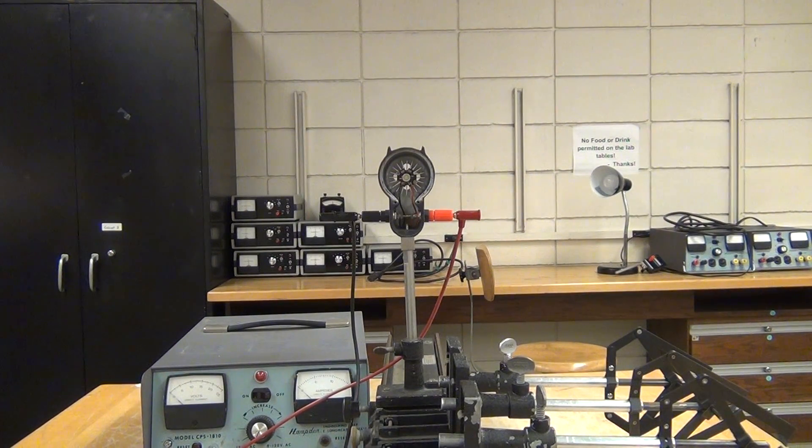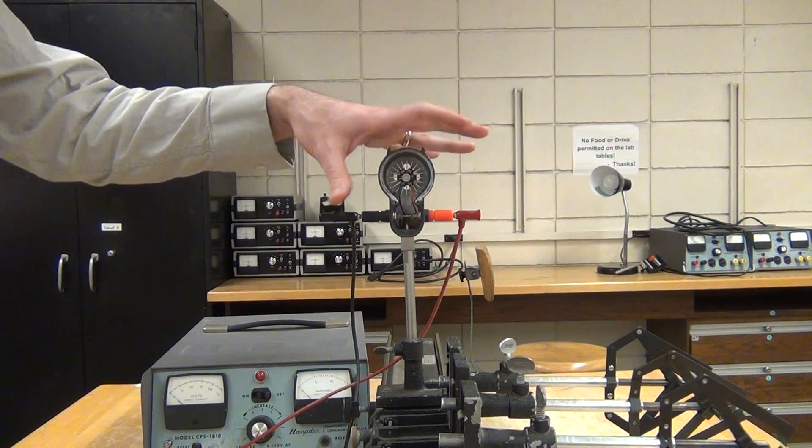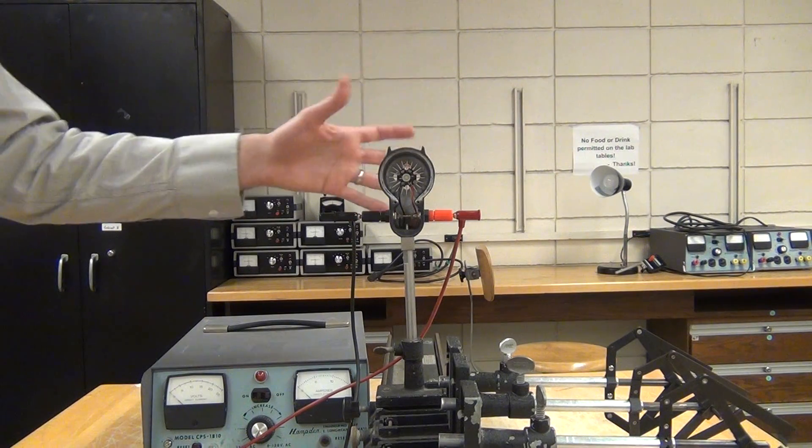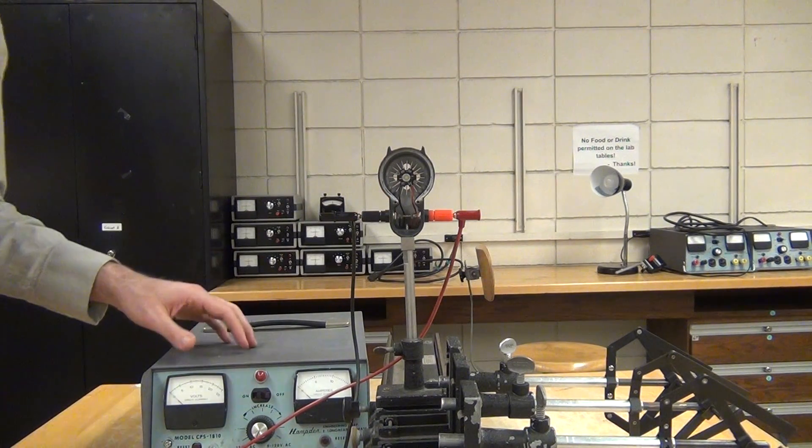This investigation will look at polarized light and the effect of polarizers on light. You'll need a light source - you can use a small LED or a desk lamp, whichever your TA has set up for you.